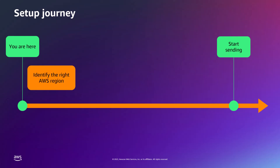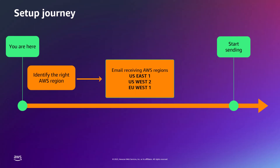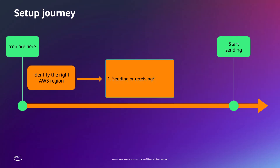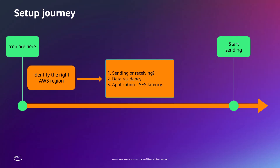The first step is to identify the right AWS region. SES is currently available in 21 AWS regions for email sending and in 3 AWS regions for email receiving. The 3 AWS regions for email receiving are US East 1, US West 2 and EU West 1. When choosing the AWS region for SES you should consider: does your use case only involve sending emails or are you planning to also receive? Do you have any data residency requirements? And in which AWS region is your application currently hosted?